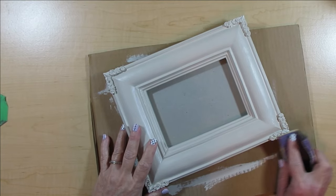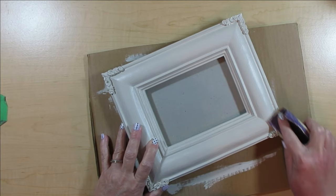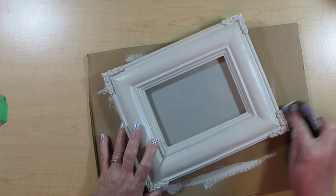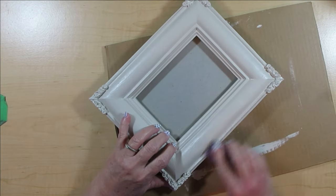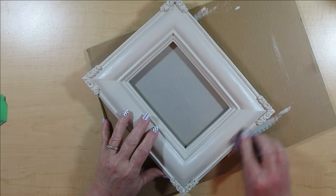I'm using some 80 grit sandpaper and I'm going to be going pretty heavily around the corners here. I want some of that gold to come back, and I'm also going to do it on all of the raised ridges that you see on the frame.